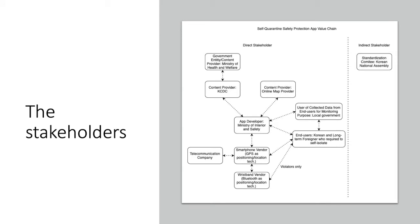Here is the stakeholders value chain diagram of the Self-Quarantine Safety Protection app. First, the direct stakeholders. It can be seen here that the Ministry of Health and Welfare, KCDC or Korea Centers for Disease Control and Prevention, and online map providers are the content providers of this app. They provide information regarding COVID-19 symptoms, self-quarantine guidelines, and an online map that shows the user's current location point. As mentioned previously, the Ministry of Interior and Safety is the developer of this app. They developed, launched, and upgraded the app.